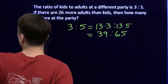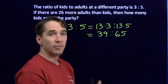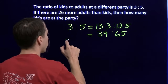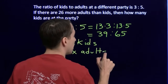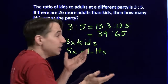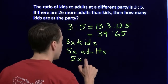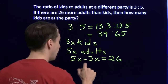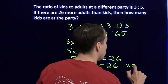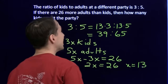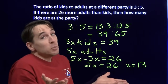Now let's do this the second way, using x. If our ratio of kids to adults is 3 to 5 and we have x groups, then we have 3x kids and 5x adults — we're multiplying the ratio by x, just as we multiplied by 13 before. We're told there are 26 more adults than kids, so 5x minus 3x equals 26. That's 2x equals 26, so x equals 13. Substituting back: 3 times 13 is 39. We've done the same problem two different ways and got the same answer — 39 kids.